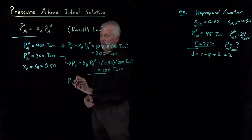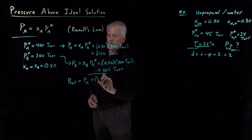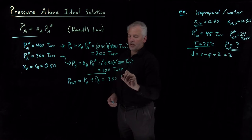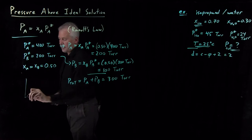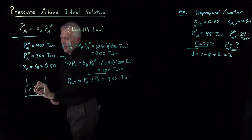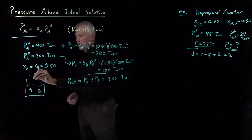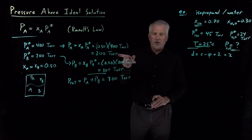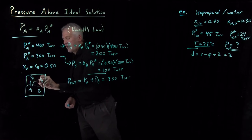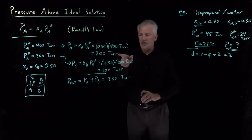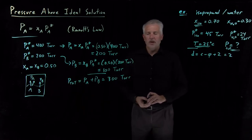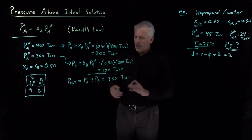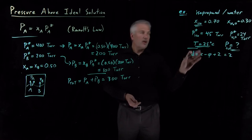Adding those two numbers together, the total pressure above the solution — the pressure of A and pressure of B added together — is 200 plus 100, giving 300 torr. In a sketch of that system, A and B are in solution and in equilibrium with the vapor, with a partial pressure of A greater than the partial pressure of B. Raoult's law tells us exactly how much of each component is in the vapor phase, and the total pressure is 300 torr.